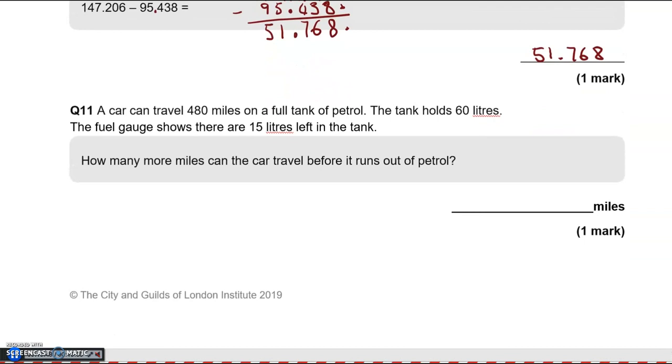In question number 11, a car can travel 480 miles on a full tank of petrol. The tank holds 60 litres. The fuel gauge shows there are 15 litres left in the tank. How many more miles can the car travel before it runs out of petrol? So 60 litres will make 480 miles. What about 15 litres? To get from 60 to 15, we have divided by 4. So we need to do the same over here. 480 divided by 4 is 120 miles.